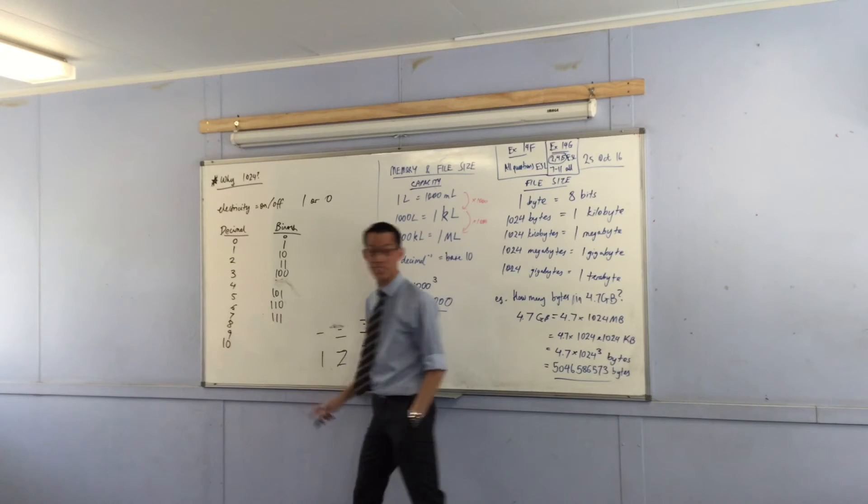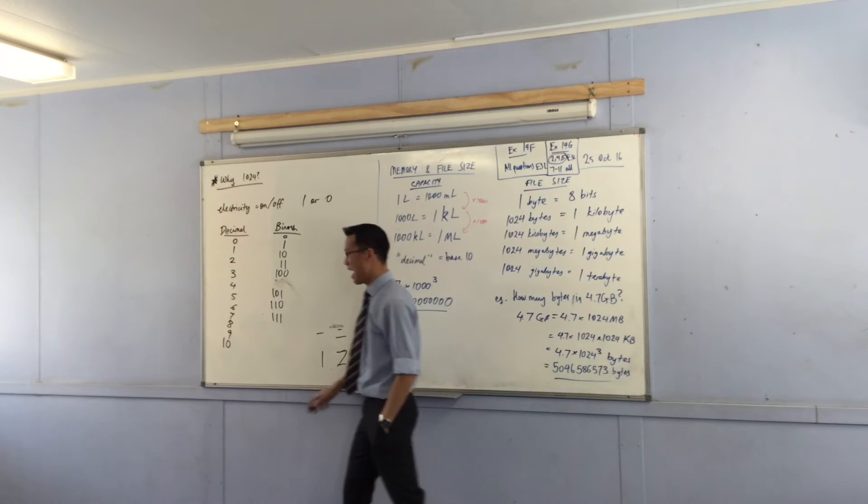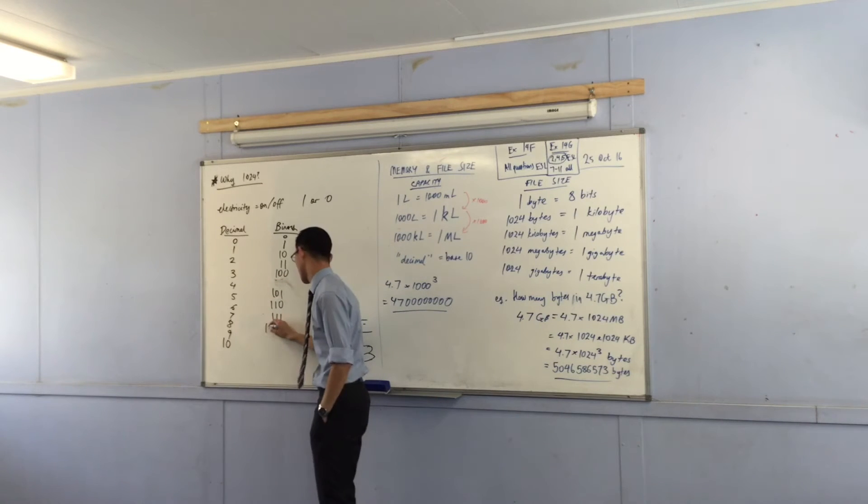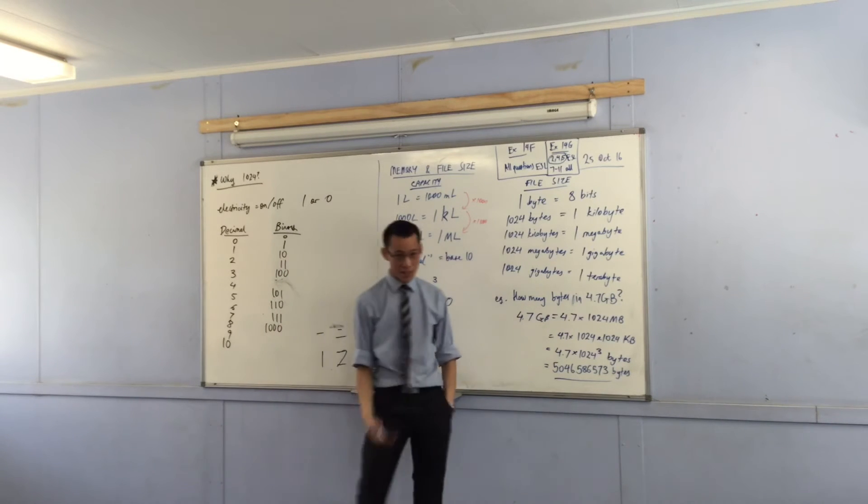So what will the next one be? I've got to go to another place value. Every time I run out of symbols I have to go to a new place value. So the next one will be - and then I'll be - that's seven. And now I'm going to get to eight. What am I going to do? I've run out of shapes, so I need another place value. So there's eight.